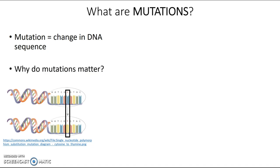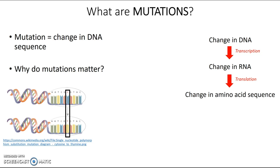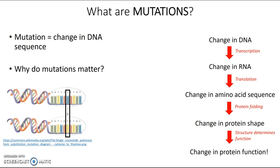Why do mutations matter? Why do we care? It all has to do with the function of DNA and what it codes for. If a mutation causes a change in DNA, and that DNA gets transcribed into mRNA, then that mRNA will also have the change in it. When that mRNA gets translated, it might result in a different amino acid sequence. And because the specific sequence of amino acids determines the exact way in which a protein folds up into its final 3D structure, that could result in a change in the shape of the final protein. A protein's exact 3D structure is what determines its function, so if its shape has changed, then its function may change or be lost as well.